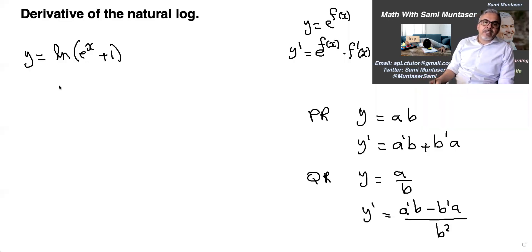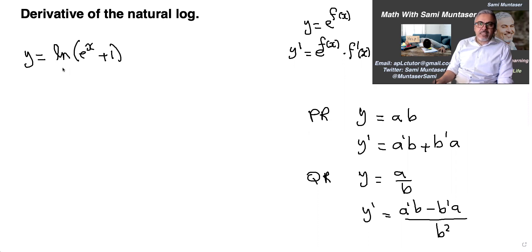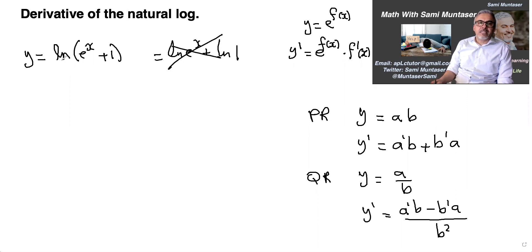Here's another one: the natural log of (e to the x plus 1). One thing you don't want to do here is distribute the ln into e to the x and into 1, because this is not ln times this expression — it's the ln of this whole expression. That's a common mistake: some students write ln(e^x) plus ln(1), thinking they can distribute, but that's wrong.